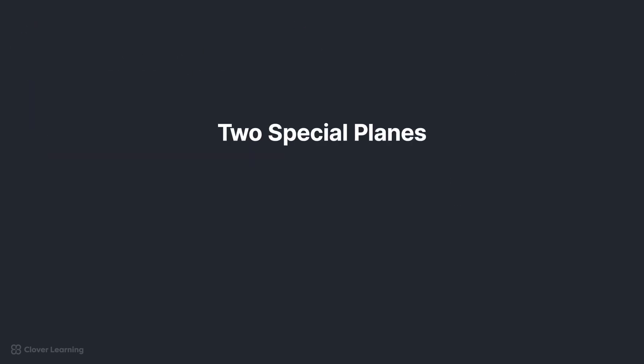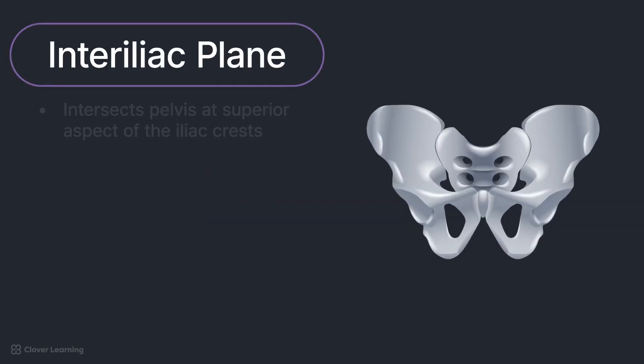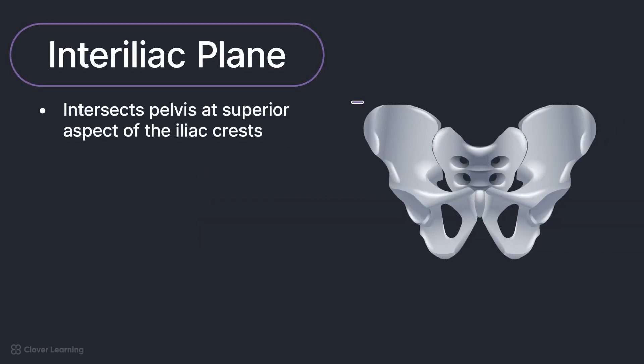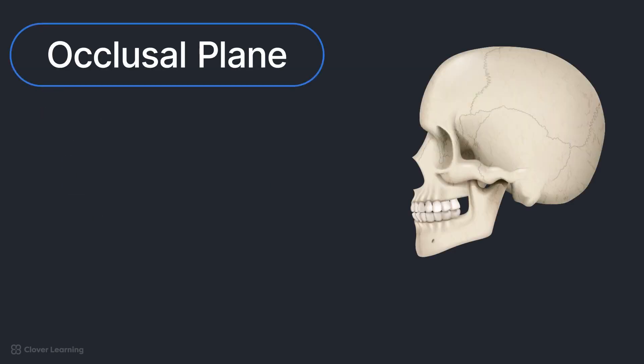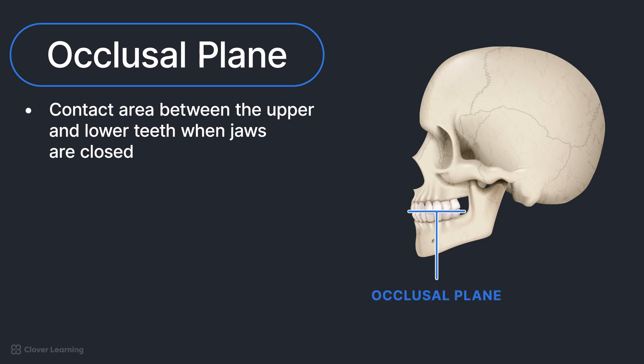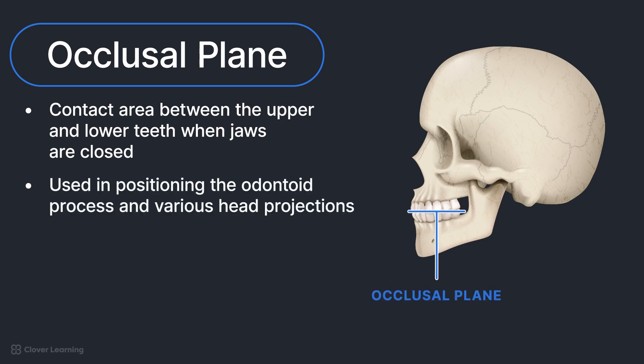There are also two special planes used in radiographic positioning that are localized to specific areas of the body. These are the interiliac and occlusal planes. The interiliac plane intersects the pelvis at the superior aspect of the iliac crests, specifically at the fourth lumbar vertebrae level. This plane is commonly employed for positioning the lumbar spine, sacrum, and coccyx. The occlusal plane is defined as the contact area between the upper and lower teeth when the jaws are closed. It plays a crucial role in positioning the odontoid process and various head projections.